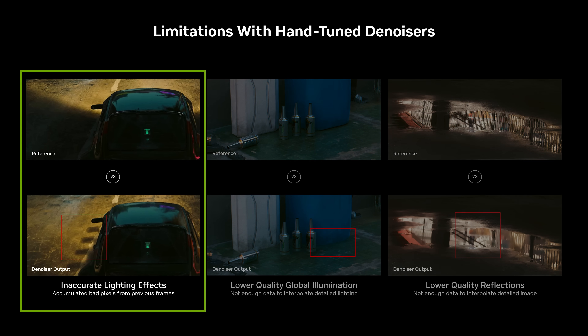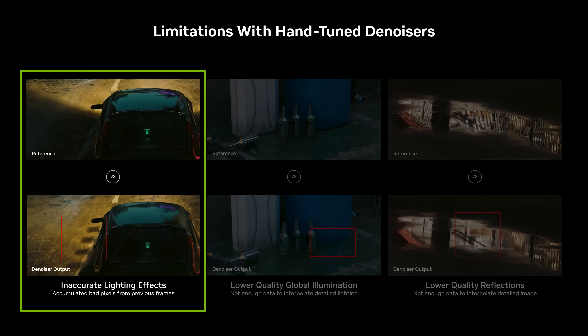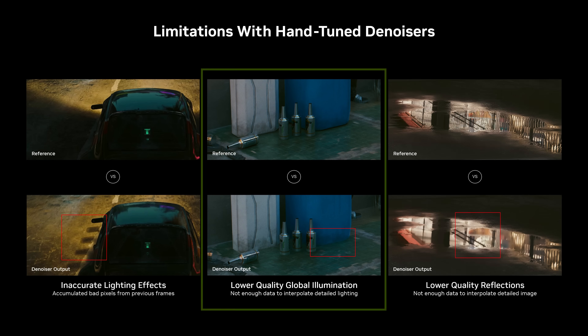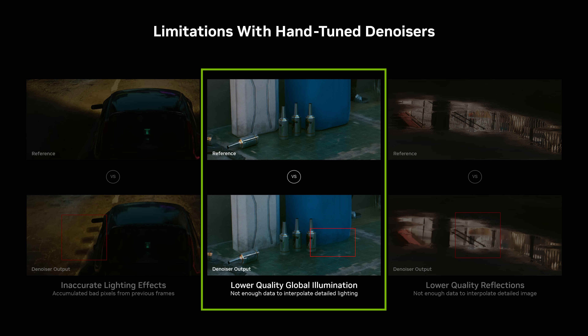For example, here you can see ghosting that's introduced when the denoiser grabs information from the past frame in the wrong place. And you can also see in this example that the global illumination effects in this image were removed by the denoiser.